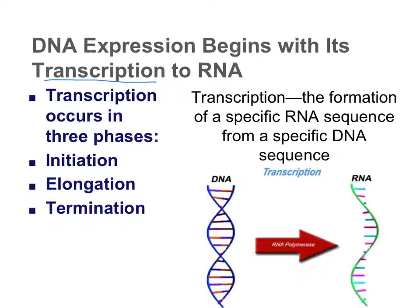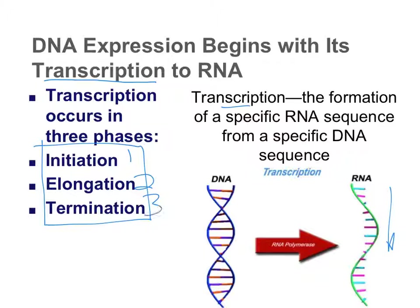Transcription can be a complex process. There are three phases to recognize and understand: initiation — how the transcription process gets started; elongation — the process of adding RNA nucleotide bases together in sequence; and termination — what signal tells the process to stop.